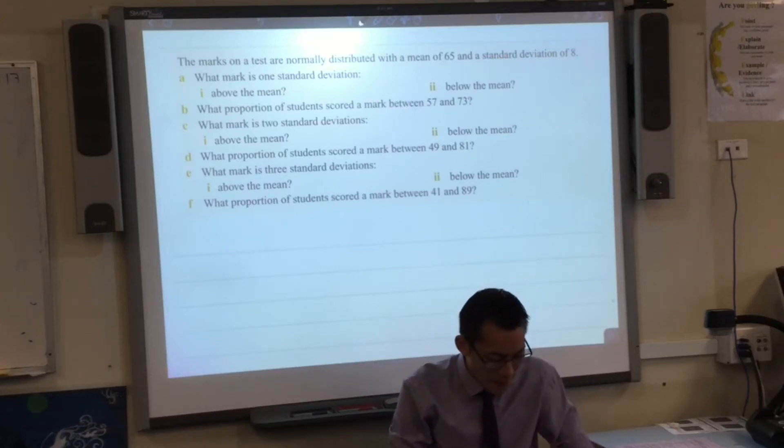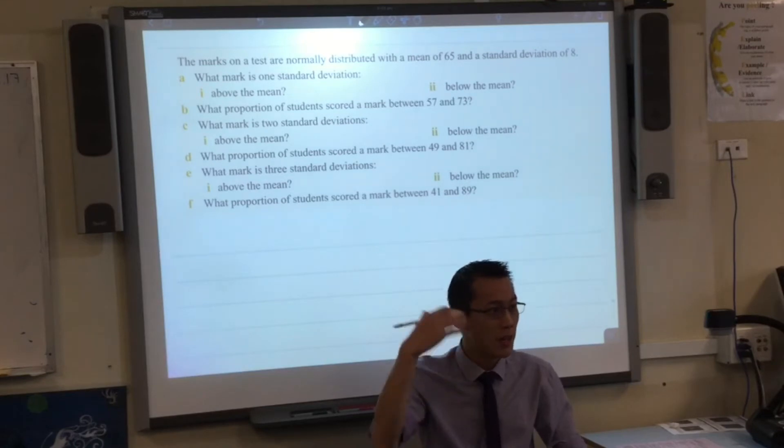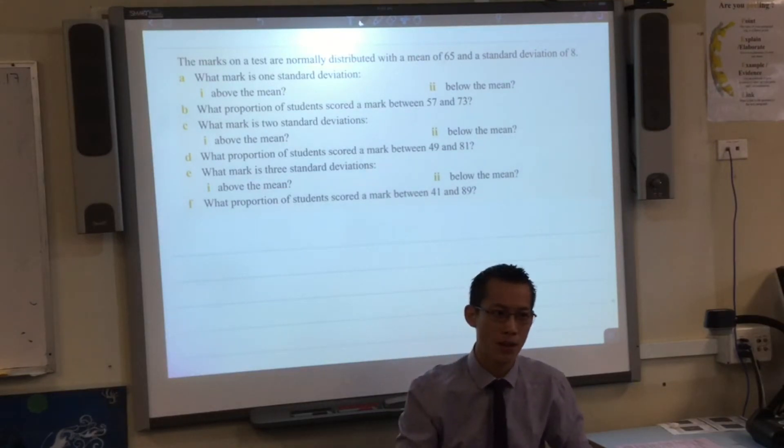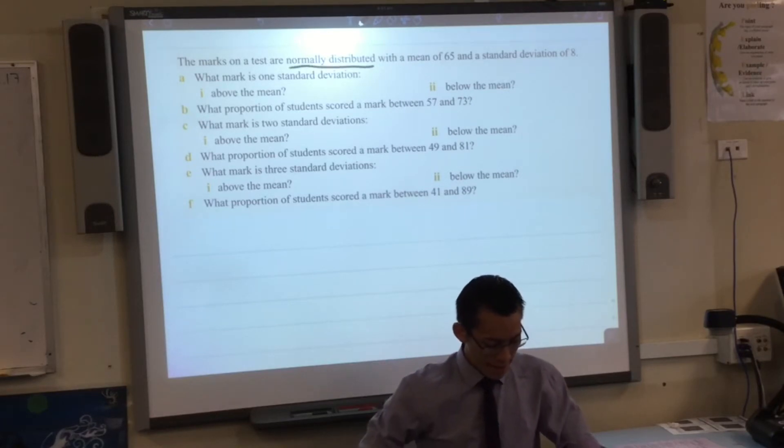Alright, read with me. The marks on a test are normally distributed, so there's the key phrase for you to know that our nice symmetrical bell curve and all of those percentages we just mentioned, they're relevant. So I'm just gonna highlight that. They have a mean of 65 and a standard deviation of 8.